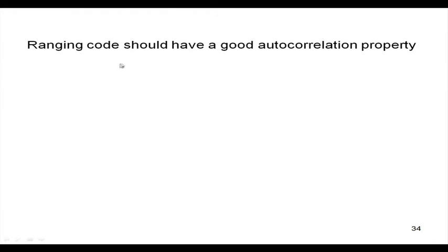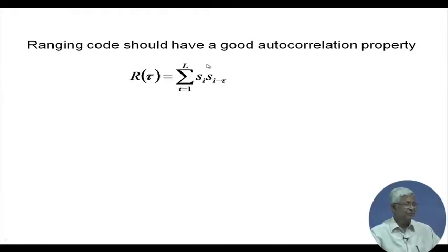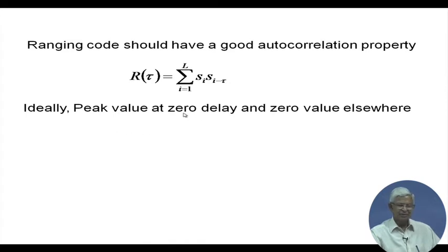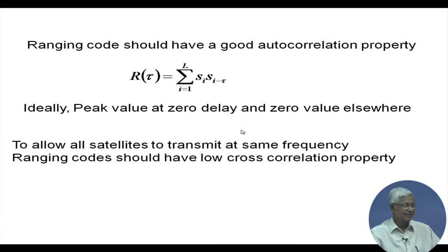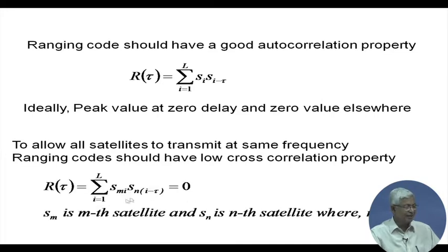The ranging code should have good autocorrelation properties. The autocorrelation R(tau) = sum of s_i times s_i(minus tau). Ideally, the autocorrelation peak should be at zero delay and zero elsewhere. It should also have low cross-correlation properties, because all other satellites are transmitting different PRN codes. To allow all satellites to transmit in the same frequency band, the cross-correlation sum of s_m times s_n(minus tau) should be zero ideally, where m and n refer to different satellites.